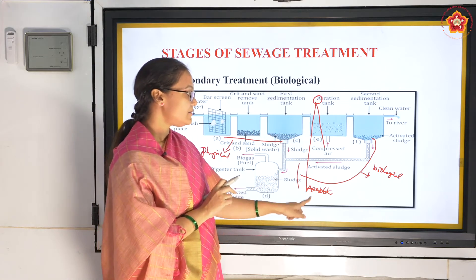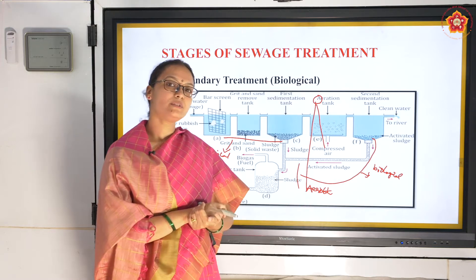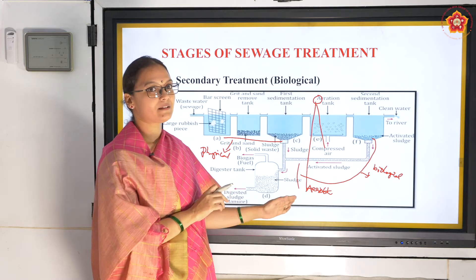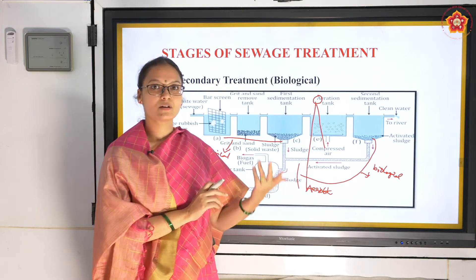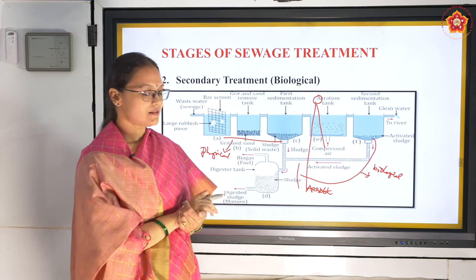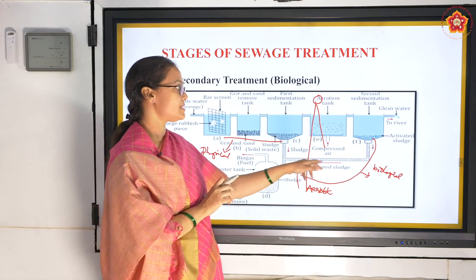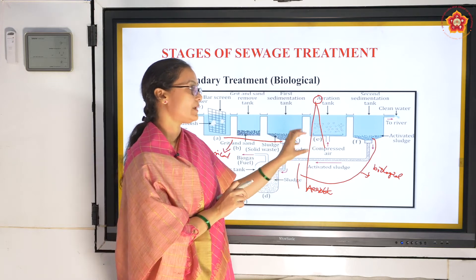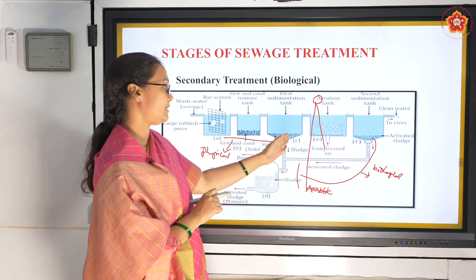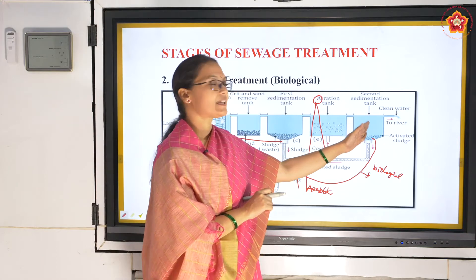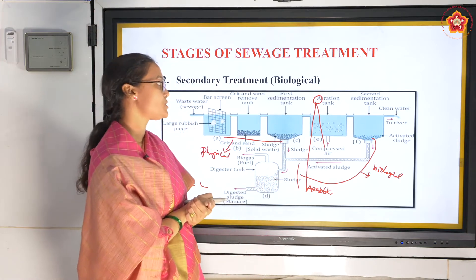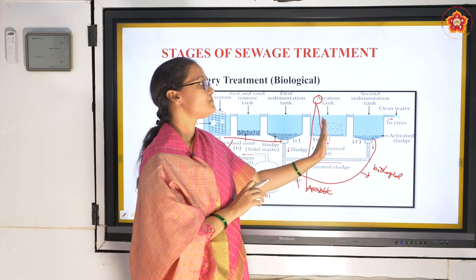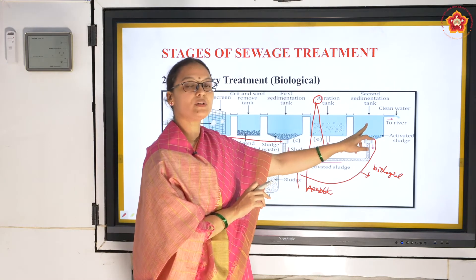The aerobic bacteria we added require oxygen - aerobic bacteria respire using oxygen. To consume the organic matter, they require oxygen, that's why we are adding air. They eat up the whole organic matter. From the aeration tank, the water is taken to the second sedimentation tank, where all the organic matter has already been removed.